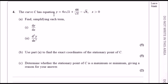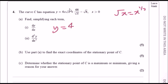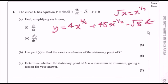The curve C has equation y equals 4x root x plus 48 over root x minus root 8. Before differentiating, rewrite this neatly: root x is x to the power half, so 4x times x to the half gives 4x to the power 3 over 2. Then 48 over root x becomes 48x to the power minus half. The term minus root 8 is a constant.